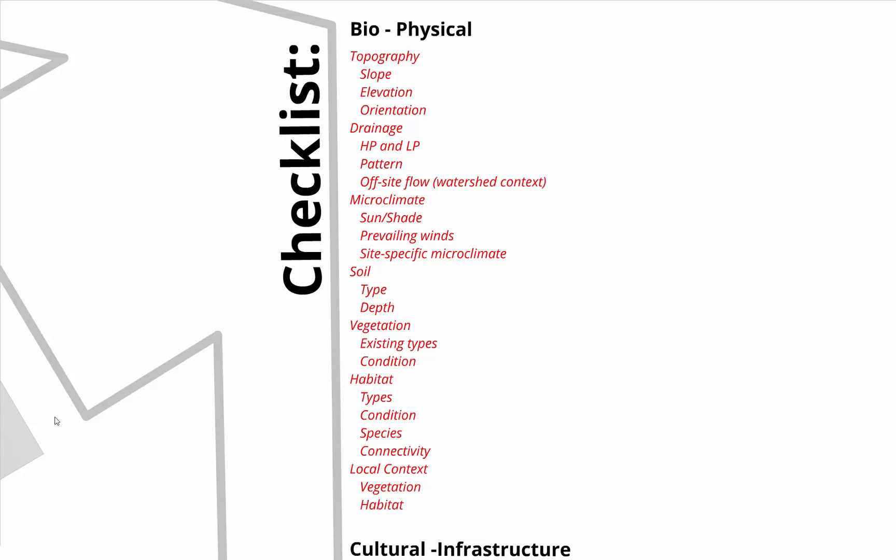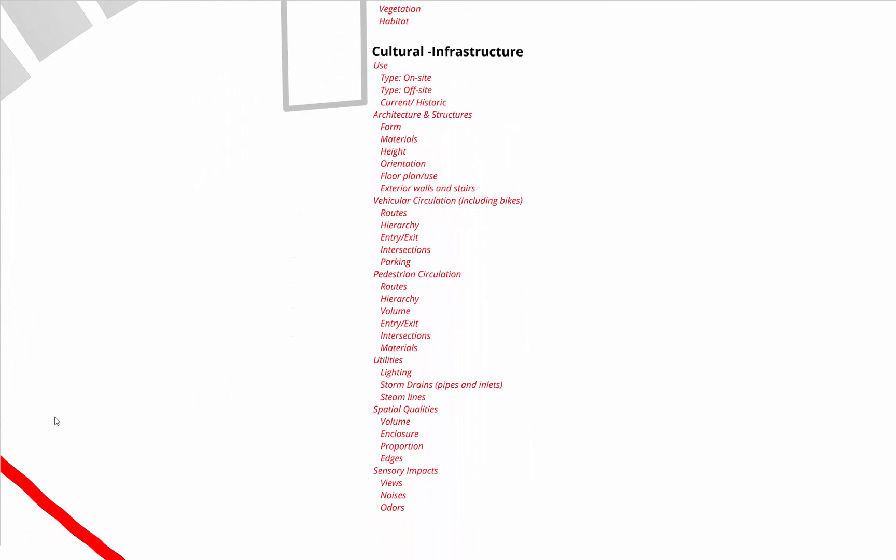Microclimate is probably a good one — prevailing winds, site-specific microclimate. For example, being more protected up by the building and more exposed out toward the parking lot. And how does the sun track across the site? What slopes will be sunny, what slopes will be shaded if you start designing your landform? That's probably an important one in this category.